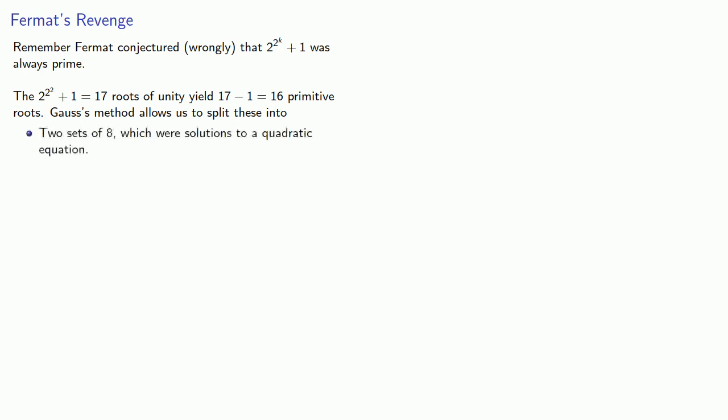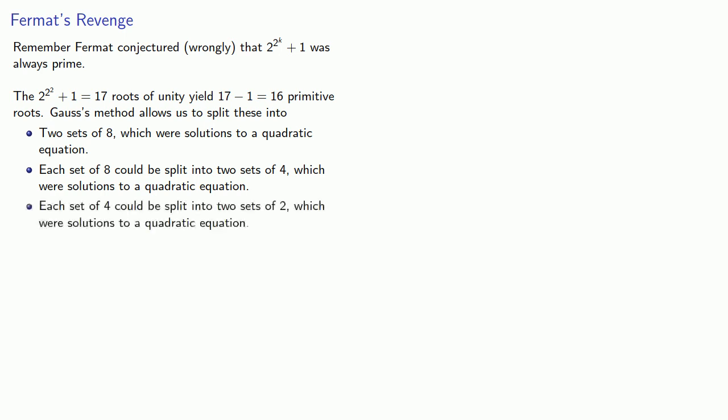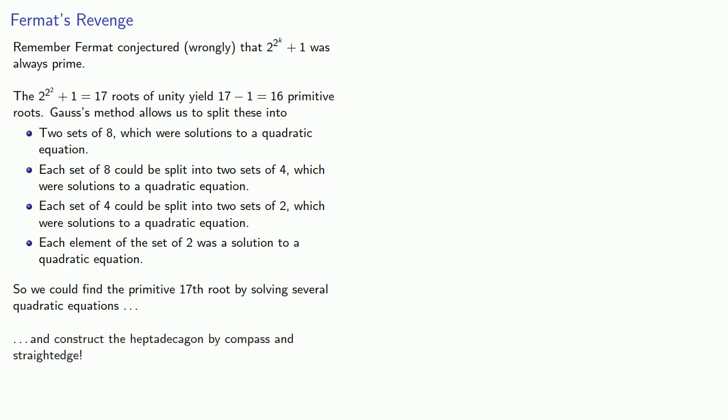Two sets of 8, which were solutions to a quadratic equation. Then each set of 8 could be split into two sets of 4, which were solutions to a quadratic equation. And each set of 4 could be split into two sets of 2, which were solutions to a quadratic equation. And each element of the set of 2 was a solution to a quadratic equation. And so we could find the primitive 17th root by solving several quadratic equations and construct the heptadecagon by compass and straightedge.